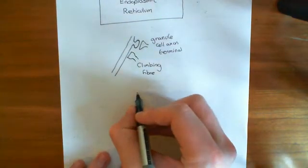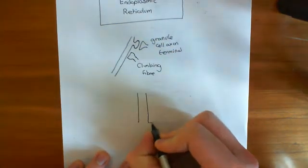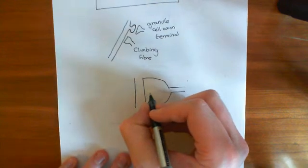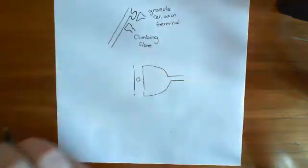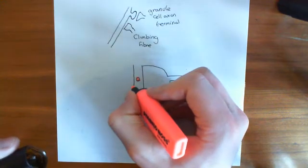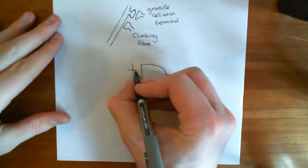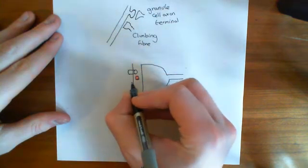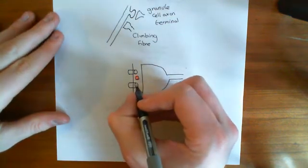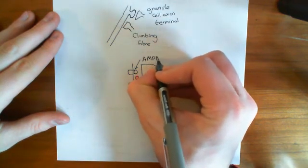Let's draw a bigger picture. Here's the membrane of the dendrite, and here's the axon terminal of the climbing fibre. The climbing fibre releases glutamate, and on the membrane of the dendrite that isn't in dendritic spines, what you have are ionotropic glutamate receptors — an AMPA receptor and an NMDA receptor. So you have two types of glutamate receptors on the membrane of the dendrite.